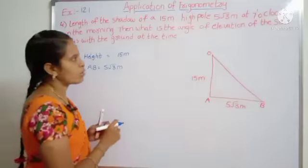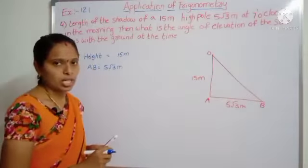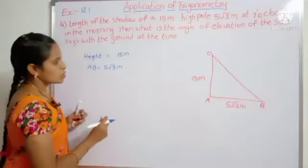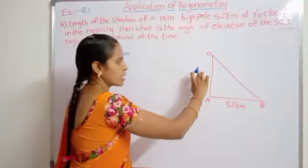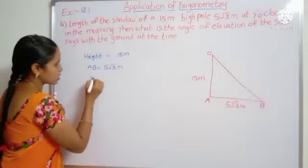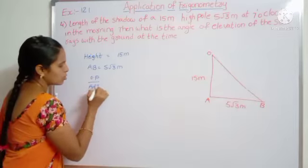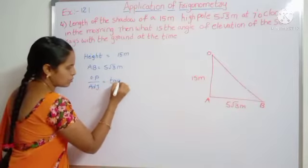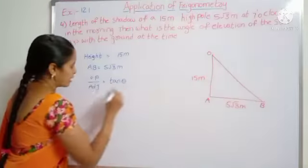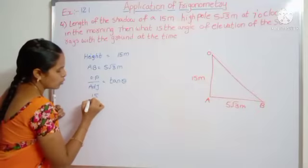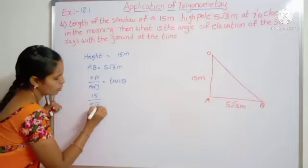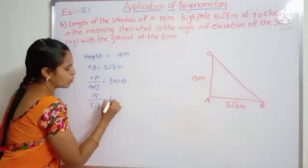We need to find out the angle of elevation. So what are the given values here? Opposite side is there and adjacent side is there. So the formula is opposite side by adjacent side equal to tan theta. Here opposite side value is 15 meters. Adjacent side value is 5 root 3 meters.